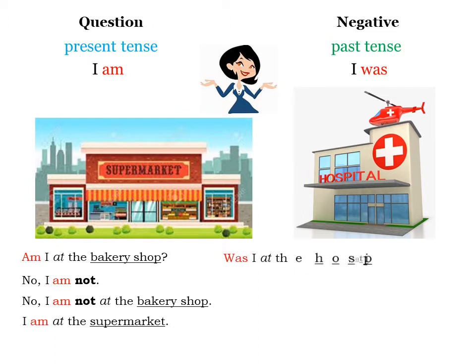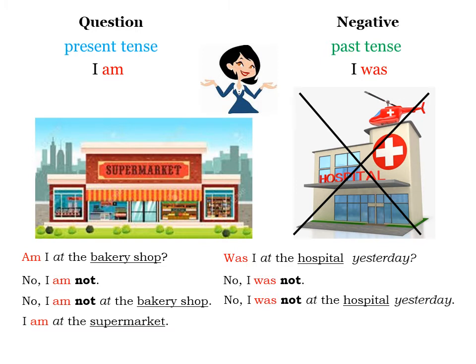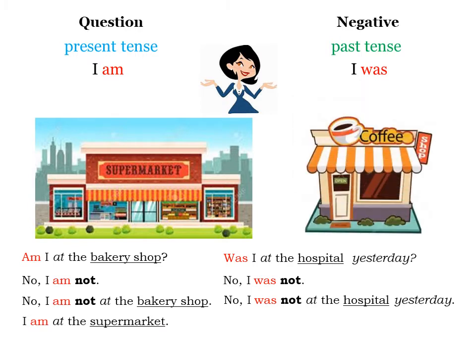Question. Was I at the hospital yesterday? Negative short answer: No, I was not. And the sentence: No, I was not at the hospital yesterday. I was at the coffee shop yesterday.